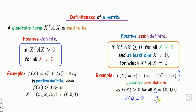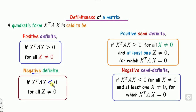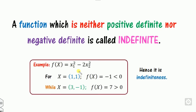For positive semi-definite, f(x) is always positive but equals 0 for at least one non-zero x. If f(x) is 0 only when x1 = x2 = 0, then no non-zero x makes it zero, so it is strictly positive definite — not semi. Negative definite means f(x) is always less than 0 for all non-zero x; negative semi-definite allows equality to 0 for at least one non-zero x. A function that is neither positive definite nor negative definite is called indefinite.